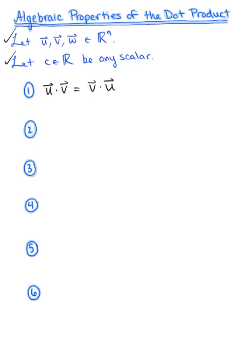The second property is that if we take a vector and dot it with itself — say vector u dot vector u — this is equivalent to the magnitude of vector u squared. This is important. We're actually going to prove this momentarily because we're going to need it for the derivation of the geometric interpretation of our dot product. So get excited.